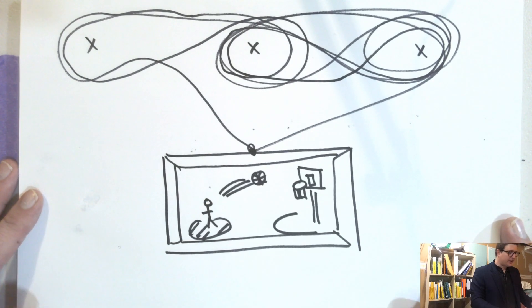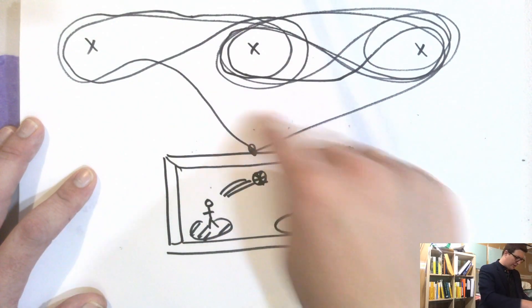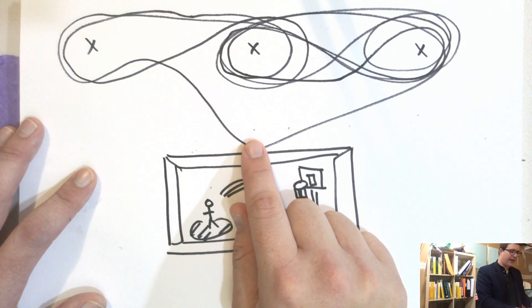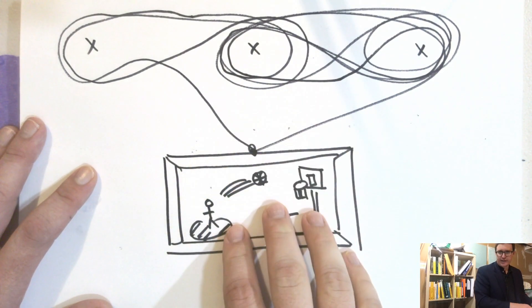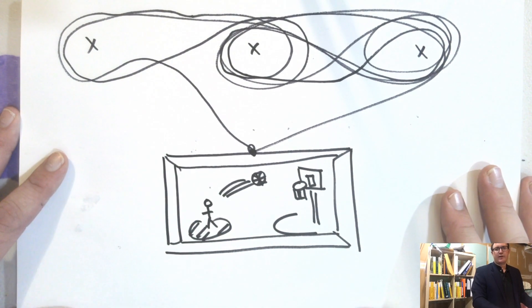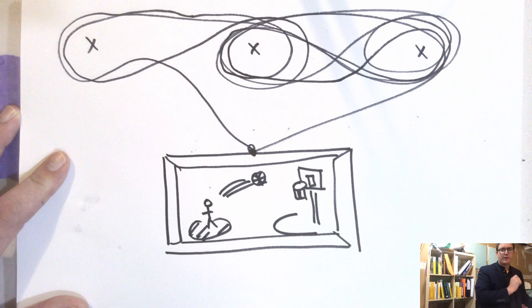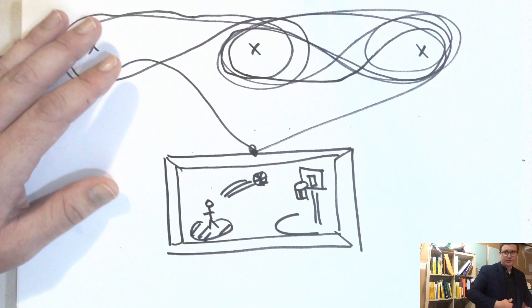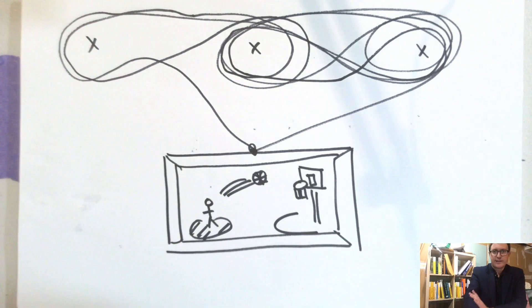And so the question is, what kind of arrangement of string do I do so that it has these two properties? The first property is that it hangs so that it's a stable picture. The second property that I want it to have is that if I remove any one of the nails, any single nail, the picture will just drop. So that's the puzzle.